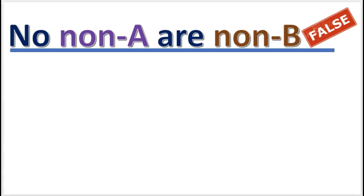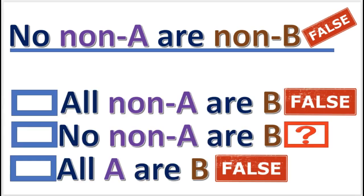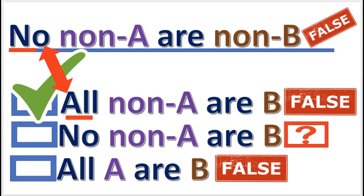Practice problem number one: if this proposition is false, what is the obverse and its truth value? The qualifier changed from 'no' to 'all.' The predicate has been replaced with its complement, and the truth value remains the same.